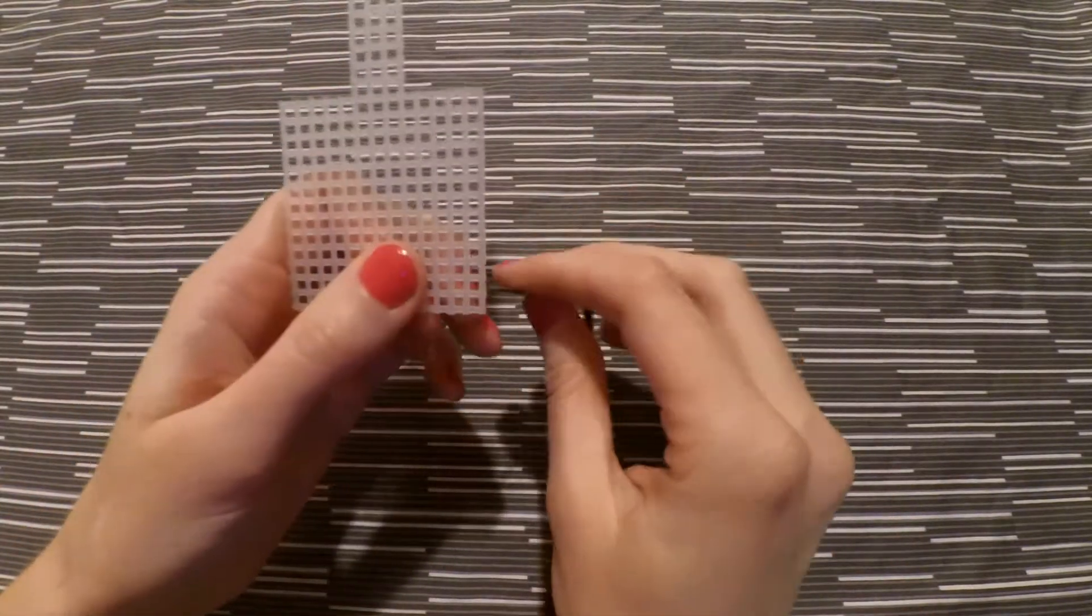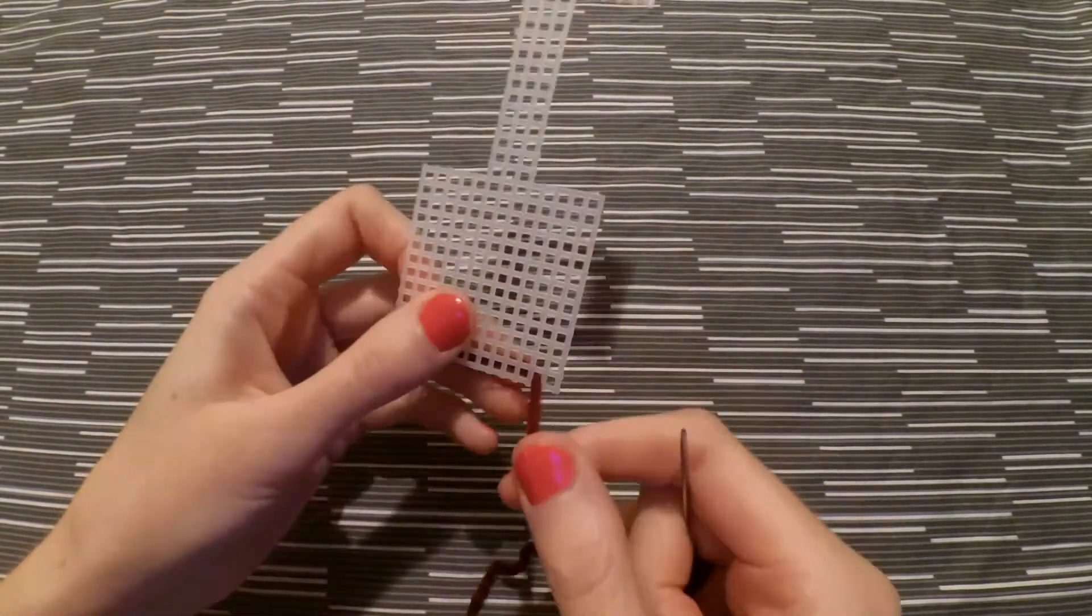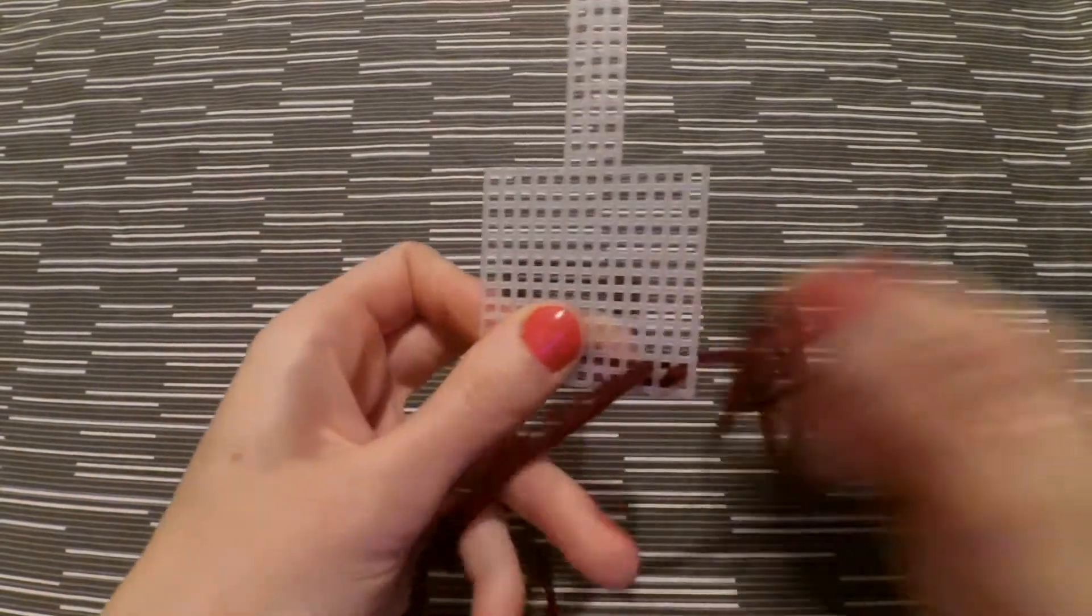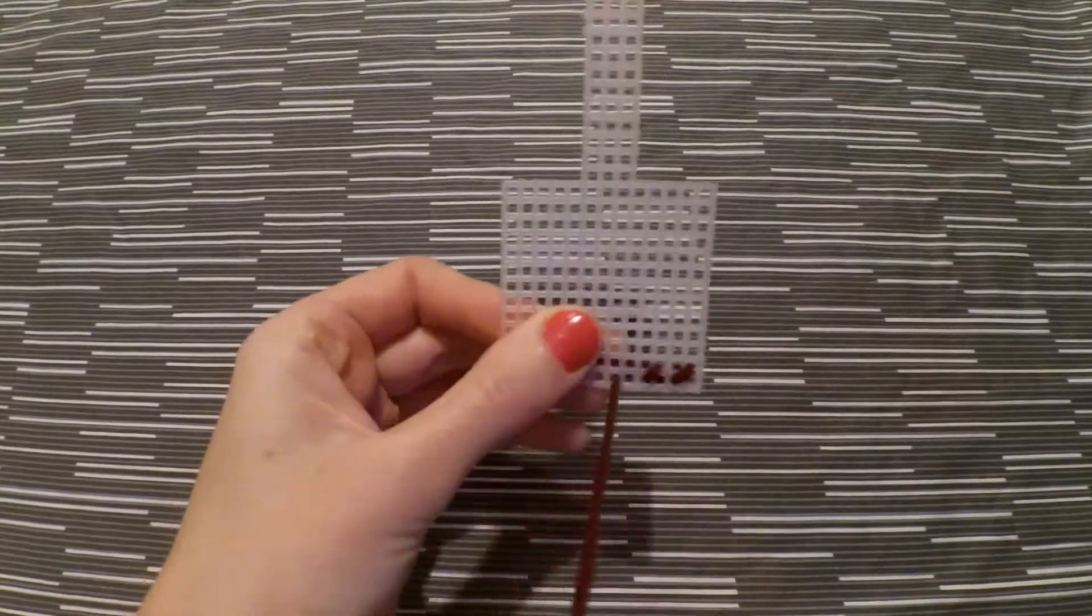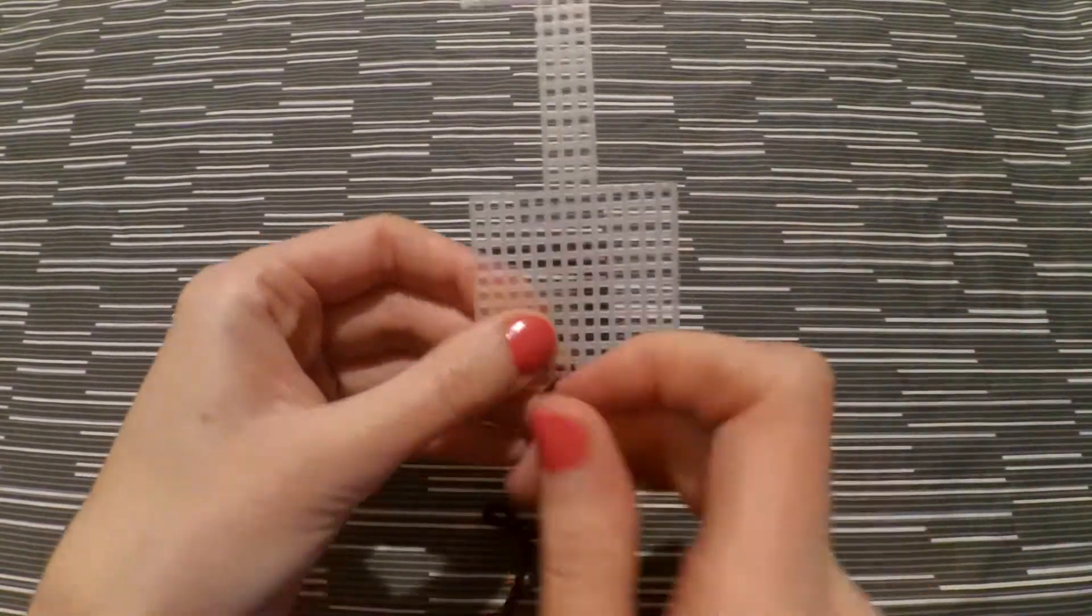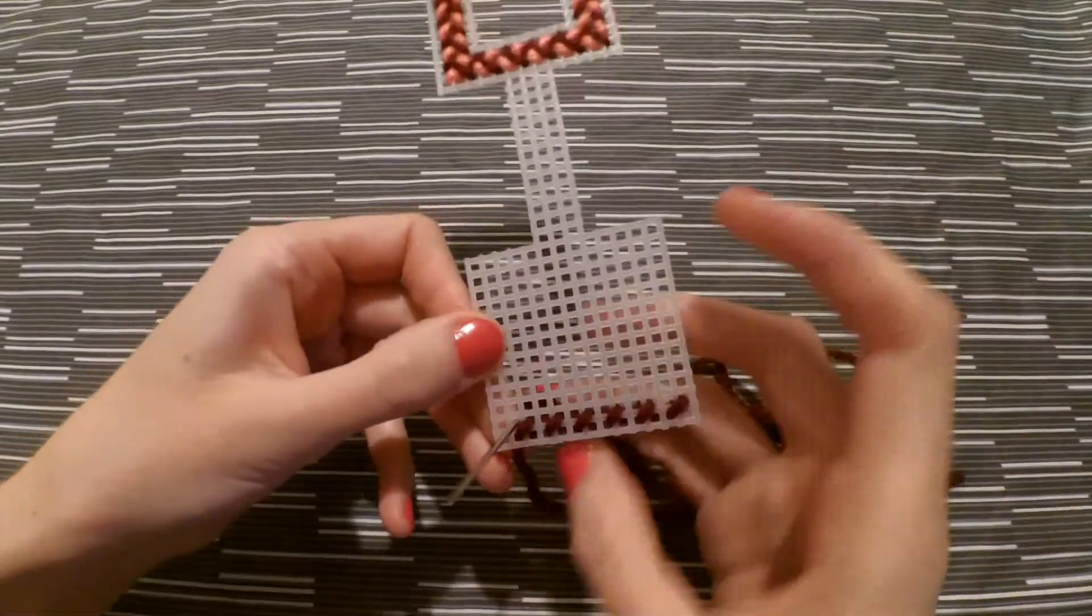So now we're going to turn the canvas around and work on the other square. And we're going to follow the same pattern but this time on the entire square. So you're going to start by the first row with every stitch facing the same direction towards the right and you're going to do every other stitch leaving a space behind for the next color.